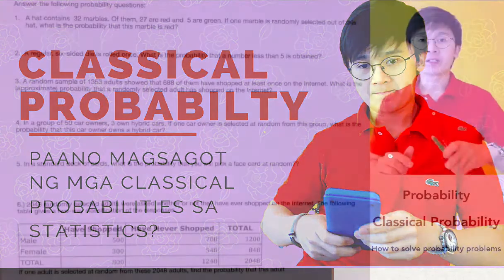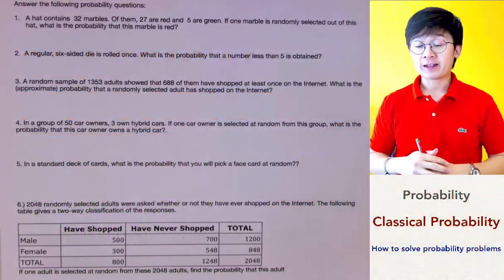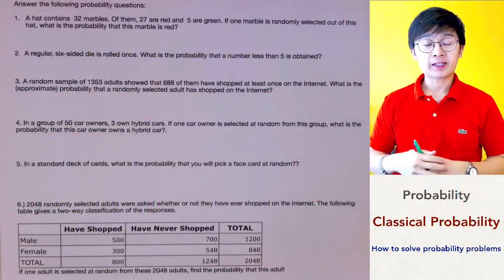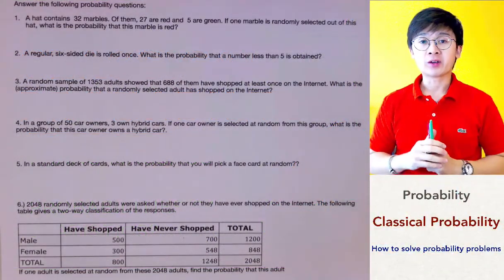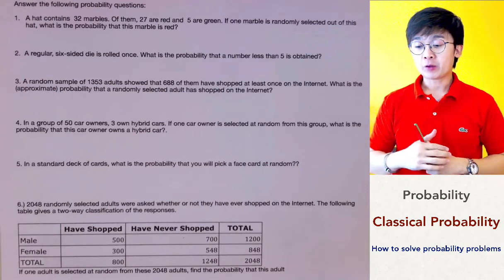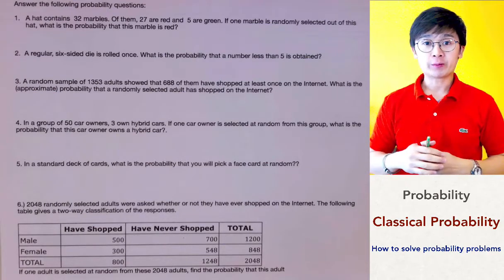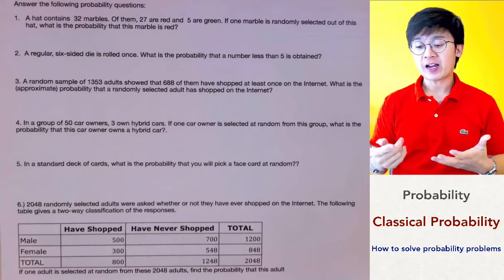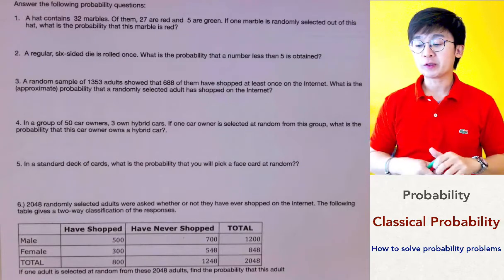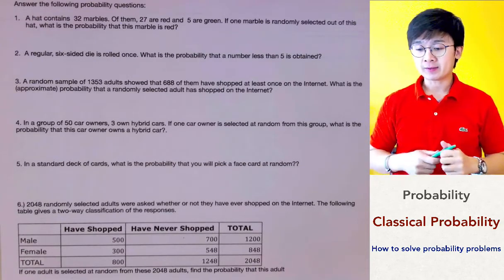Now we're going to be answering some probability questions on classical probability. In answering classical probability, the most important element in your probability fractions would be the sample space.